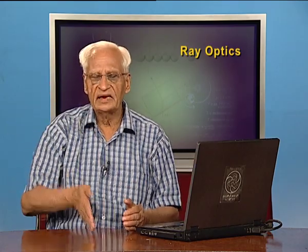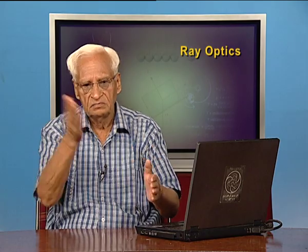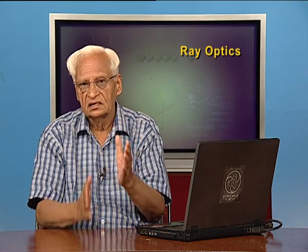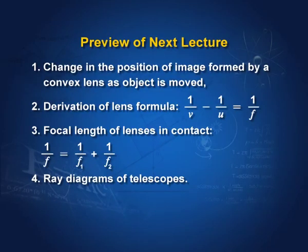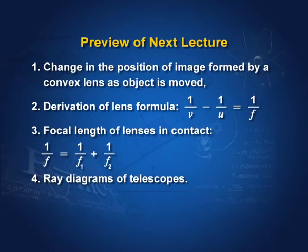We shall also re-derive the lens formula by comparing triangles geometrically, treating the lens as a thin device. Additionally, we will show that when two lenses are placed in contact, the focal length of the combination satisfies 1 by F equals 1 by F1 plus 1 by F2, meaning their powers add. This is relevant to spectacles, where the spectacle lens and the eye lens are nearly in contact, so their powers add together. We shall also study optical devices like telescopes and microscopes.